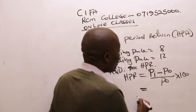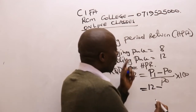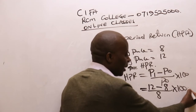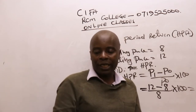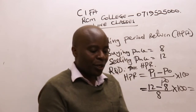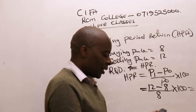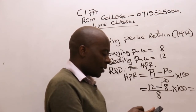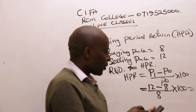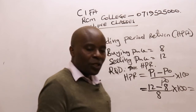Therefore, ladies and gentlemen, this will be equal to: P1 is 12 — price at the end of year one — minus P0, price at the beginning of the year, which is eight, divided by eight. Whatever we get, we change to percentage by multiplying times 100. So we have 12 minus eight, divided by eight, which gives us 0.5.